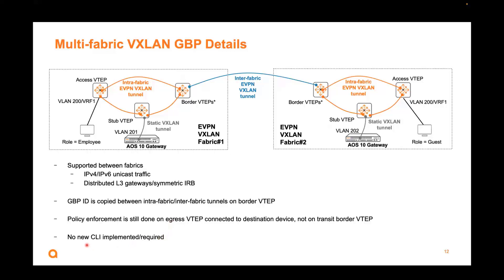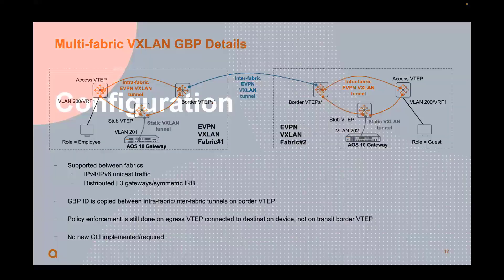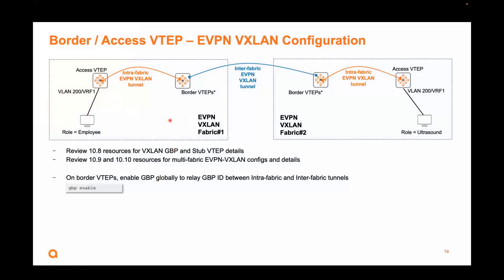There's no new CLI implemented or required for this feature. Configuration-wise, it's just one global command. For this 10.11 feature, all you need to do is enable GBP globally on the border to relay the GBPID between the intra-fabric and inter-fabric tunnels. You just need to configure that globally on the border.